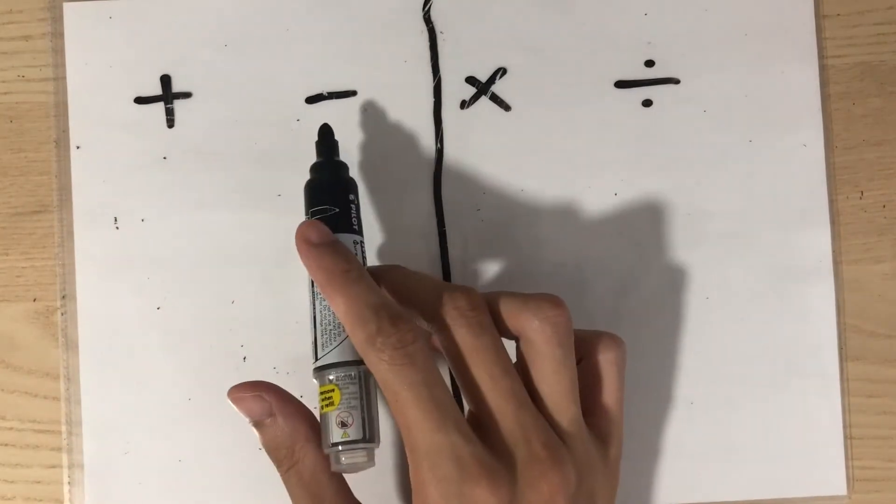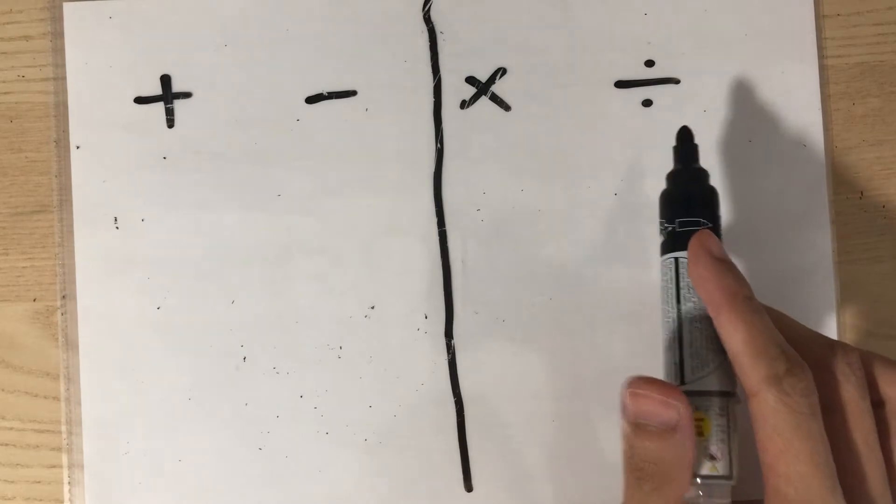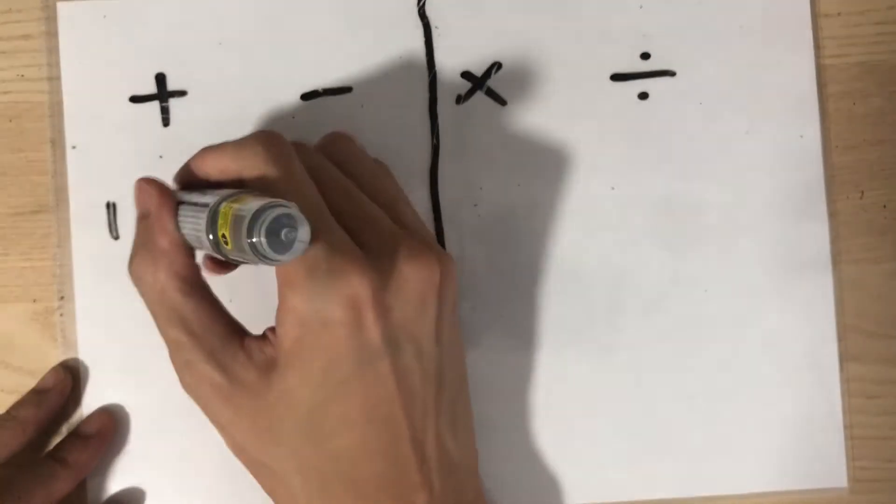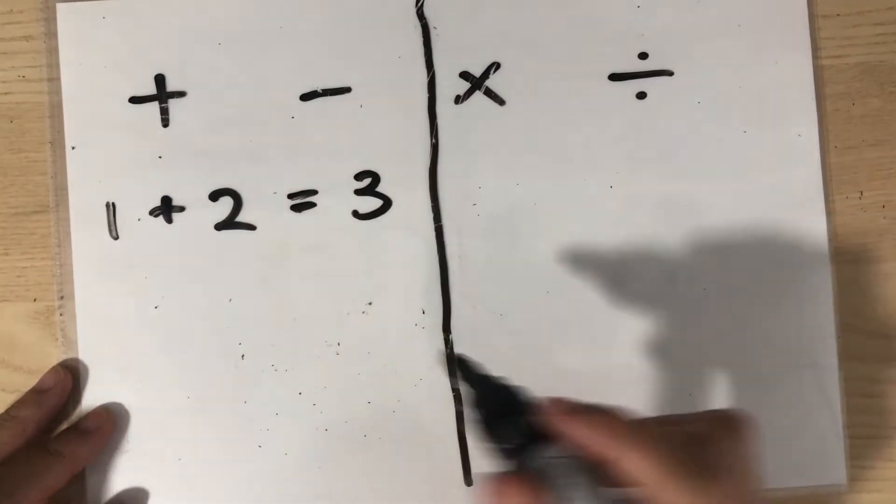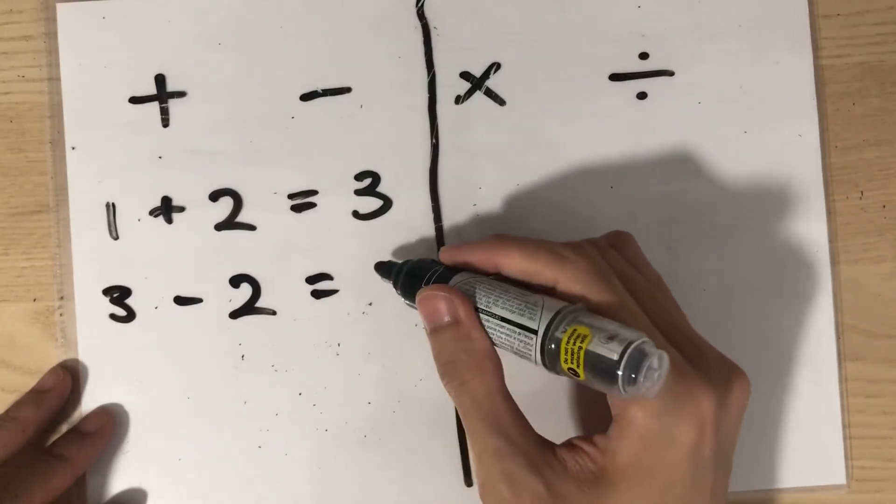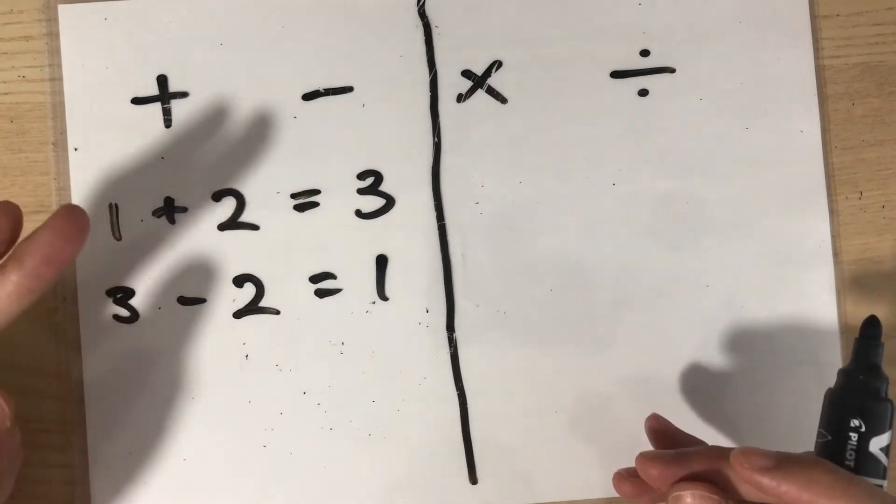Plus and minus are the opposites of one another and times and divide are also the opposites of one another. I will show you with an example. 1 plus 2, what does that equal to? It equals to 3. Now let's flip it around. 3 minus 2, what does that equal to? It equals to 1 and you can see here that plus and minus are actually the opposites.